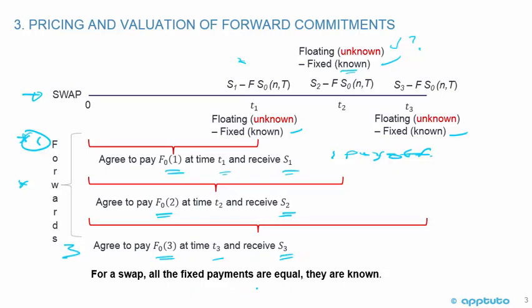For a swap, all the payments are equal and they are known. For CFA Level 1, we're not having to do many calculations in terms of the pricing and valuation — we get into that in a big way in CFA Level 2. For CFA Level 1, it's just saying that a swap is a series of payments where the fixed payment is known and the floating payment is unknown, and you could compare that to a series of forwards — forward rate agreement 1, forward rate agreement 2, forward rate agreement 3 — that only have one payoff.